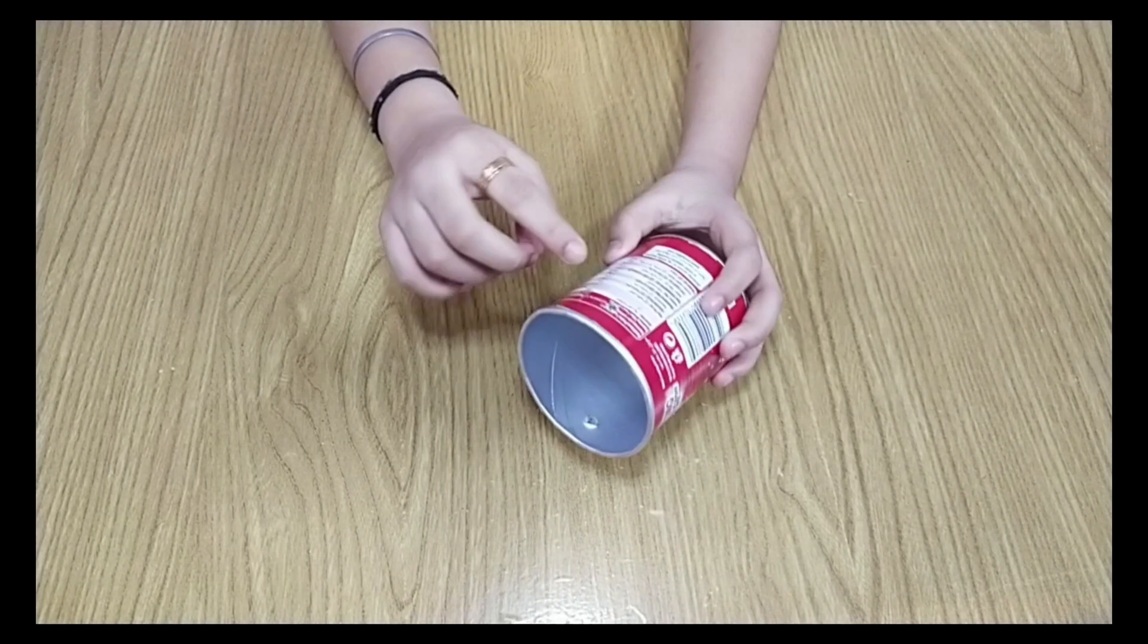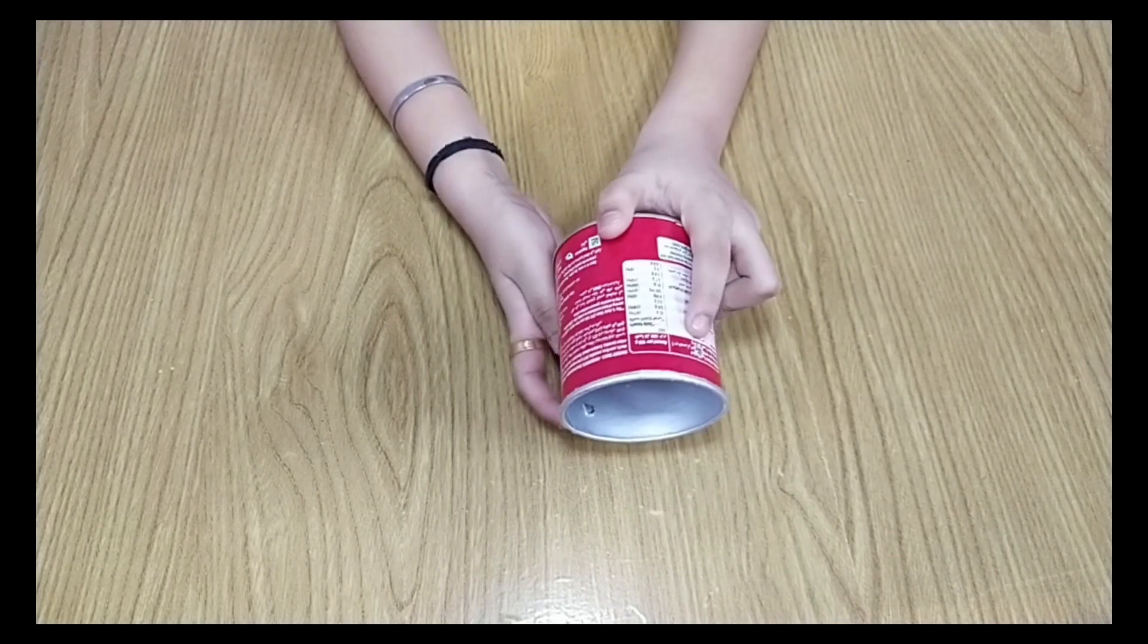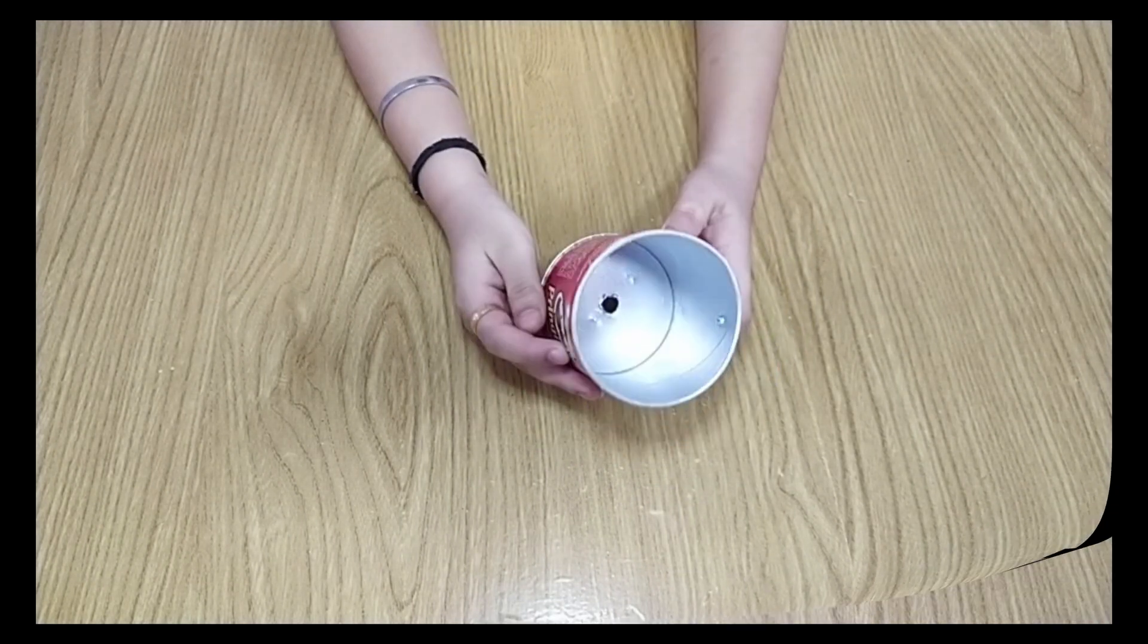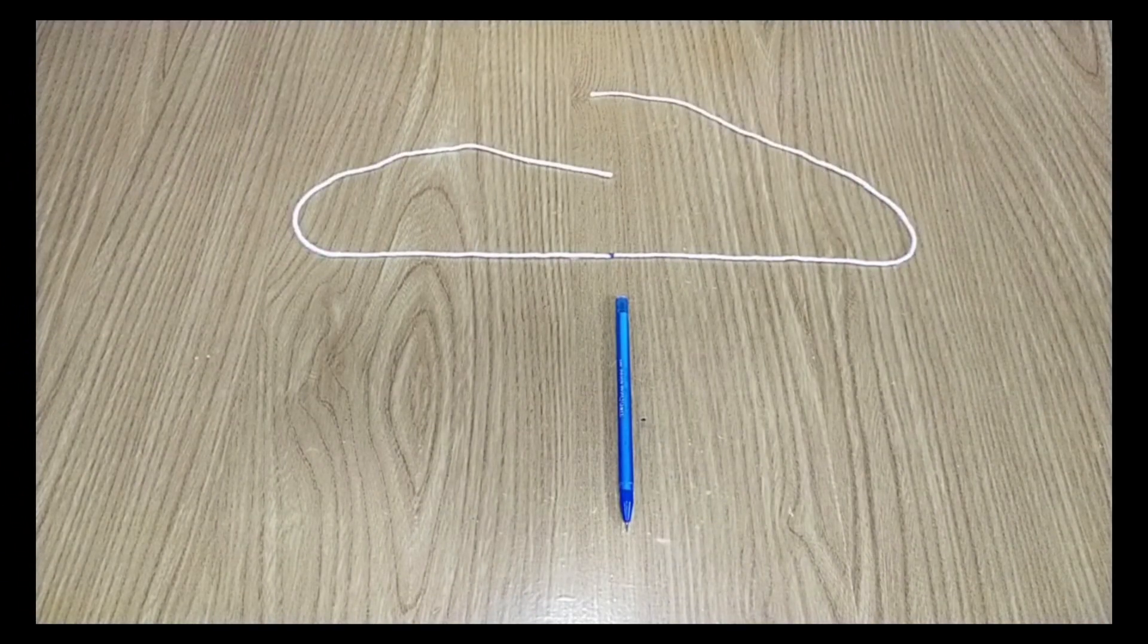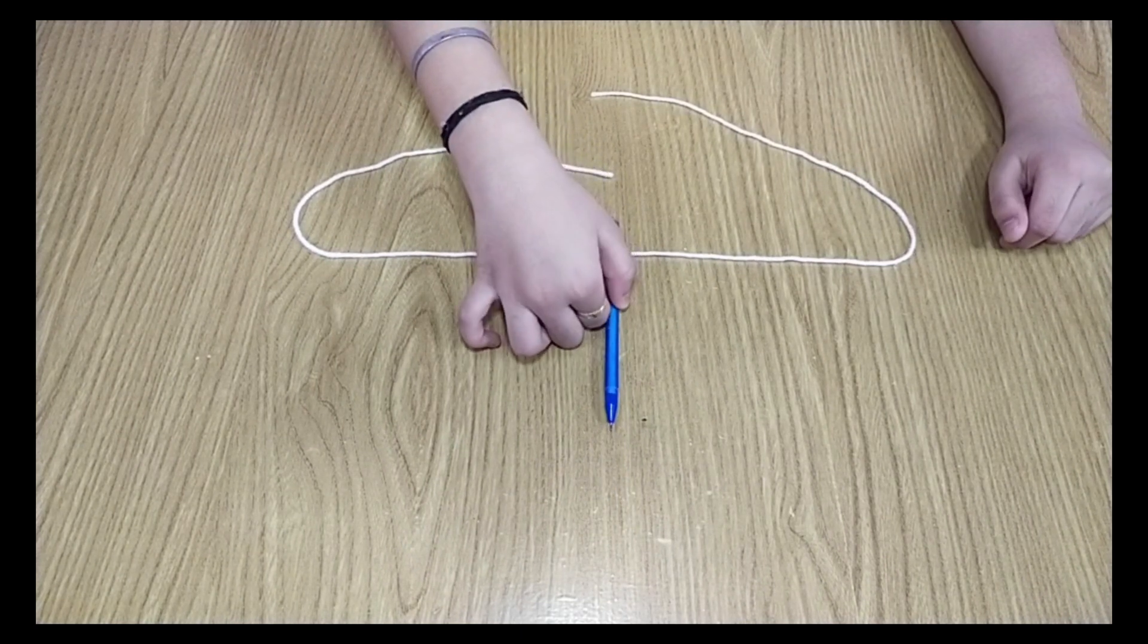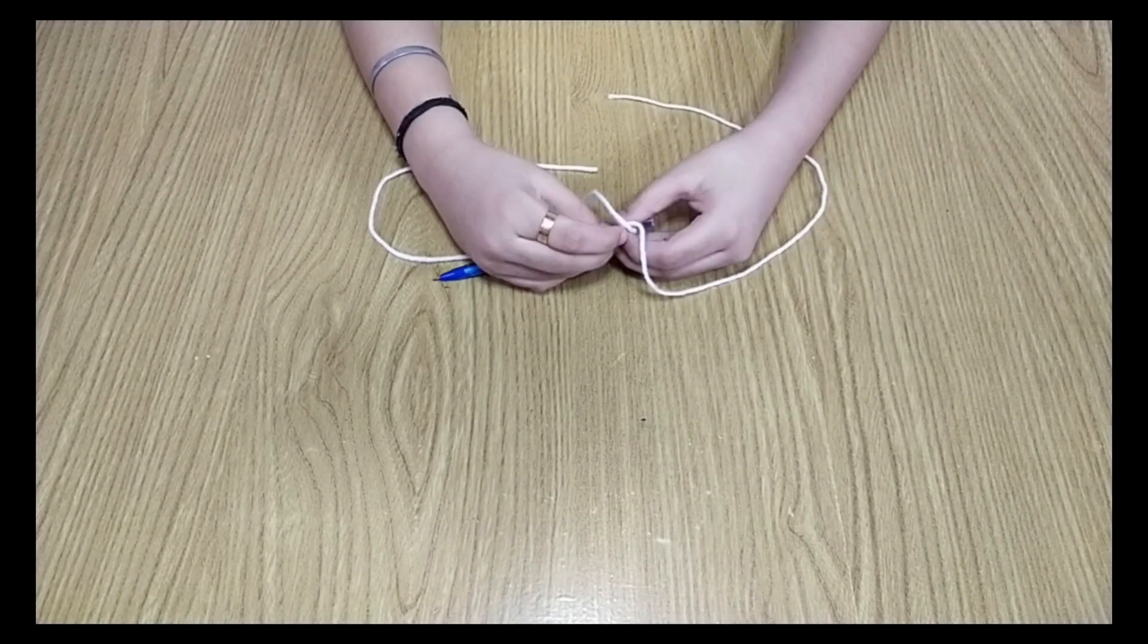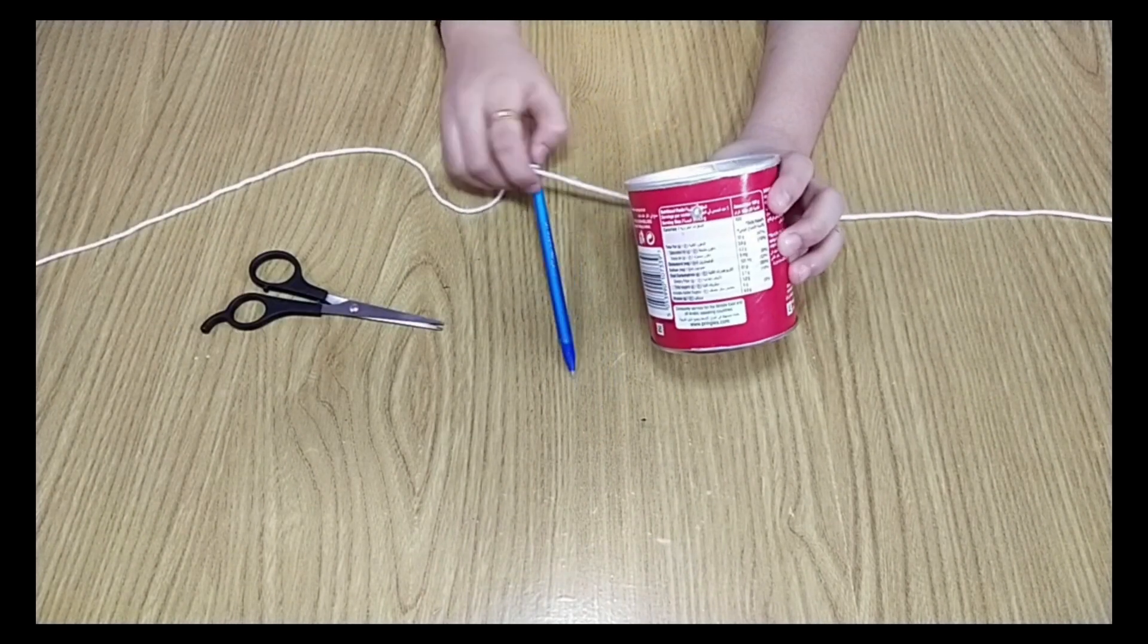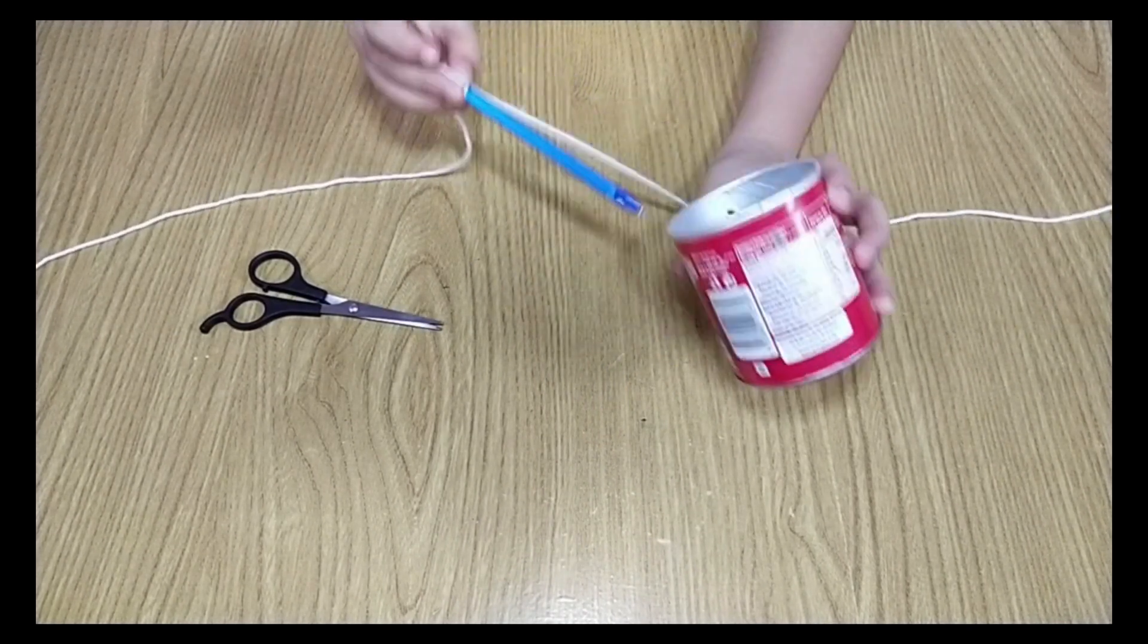Take a long thread and place the pen in the middle of the thread and tie a knot. Now insert the pen into the bottom hole of the box.